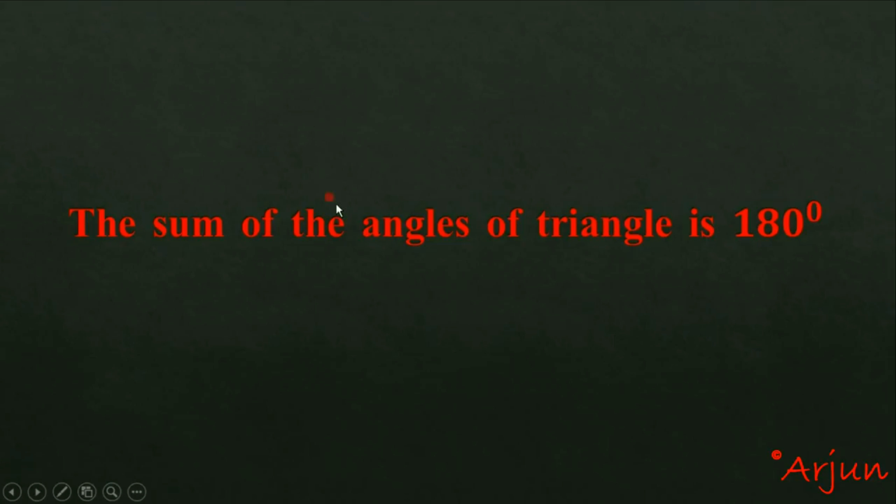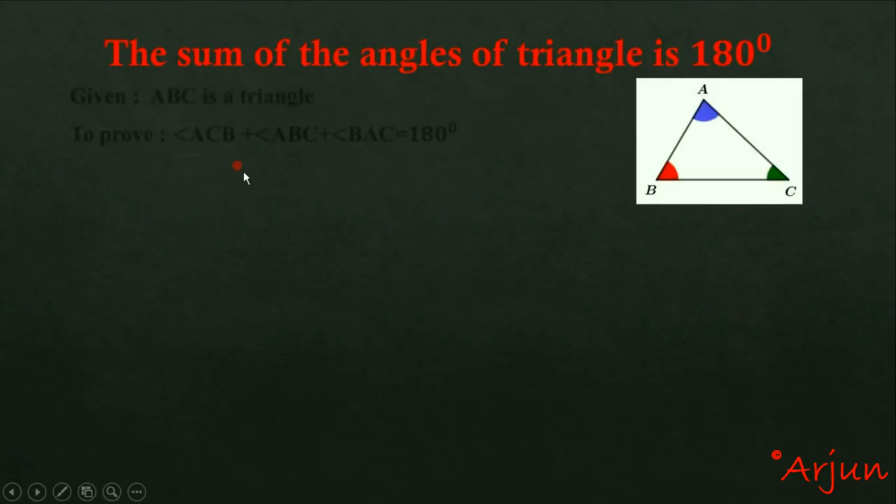This is the proof of the theorem. So the triangle is A, B, C. We need to prove that angle A plus angle B plus angle C equals 180 degrees.